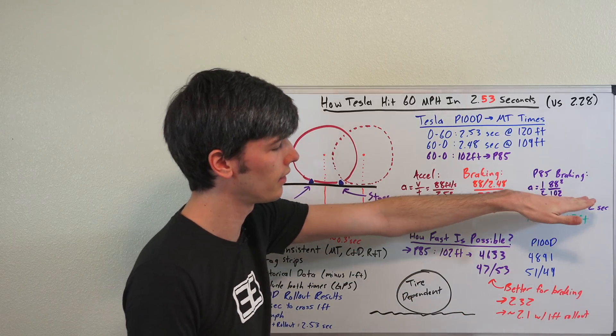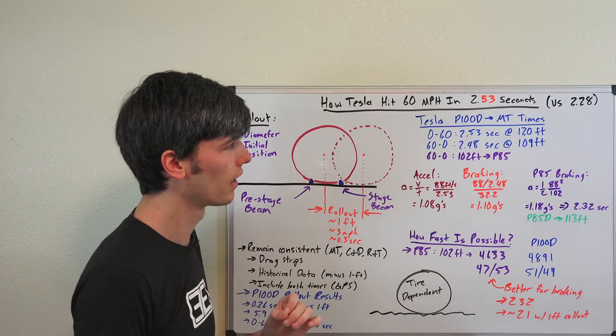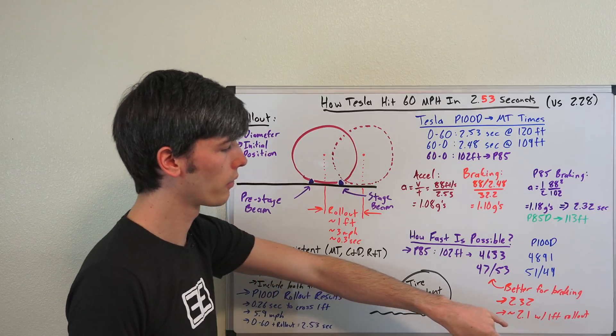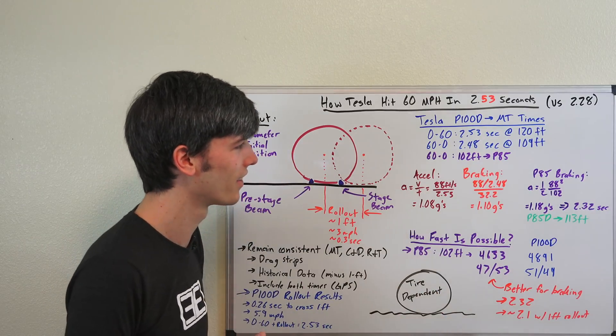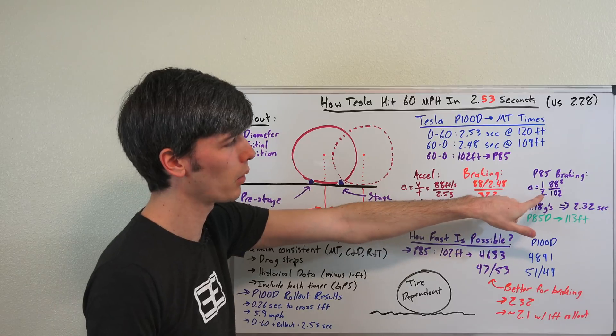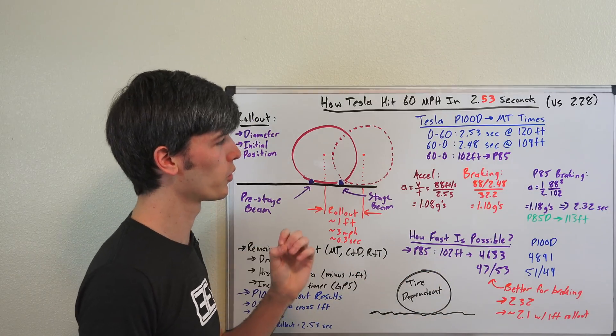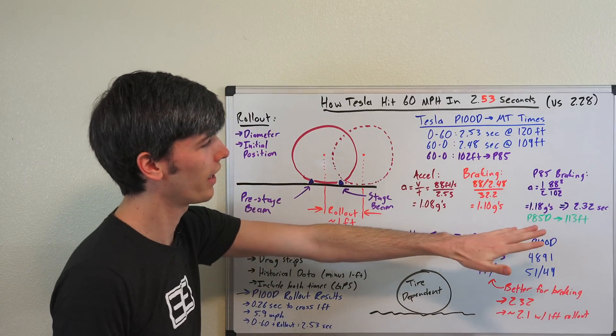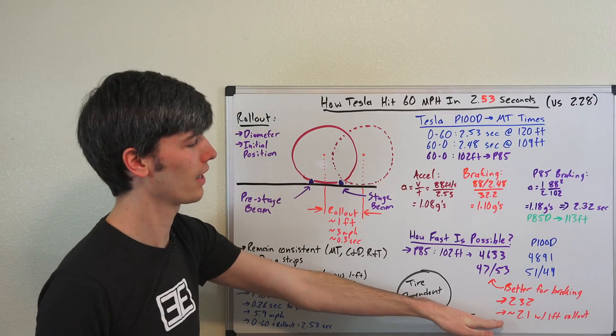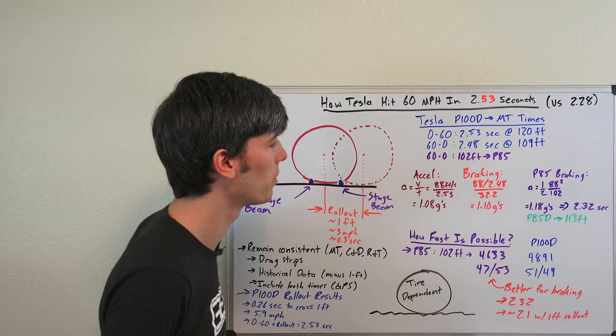Based on the grip that it has in deceleration, you could expect to see a 0 to 60 of 2.3 seconds, including that one foot of rollout time, or if you're excluding that one foot of rollout time as low as 2.1 seconds, assuming a perfect world. Now, this is kind of strange to say because this doesn't have motors up front, so it's going to have more weight and it's going to have a different weight distribution. So just based on its grip, on the grip of those tires, and assuming that you can have that grip for acceleration, you could potentially see a 2.1 0 to 60 time versus the 2.28, which we saw in the P100D.